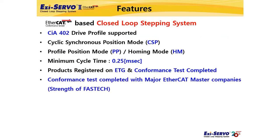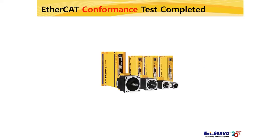The conformance was also verified by conducting actual tests with various EtherCAT master companies. Although EZ Servo 2 EtherCAT has completed compatibility verification and received official certification, it doesn't prove compatibility with each manufacturer's EtherCAT master. Thus, in cooperation with Fastech and major EtherCAT master companies, compatibility verification between master and slave based on CIA-402, a standard profile for EtherCAT drive motion control, has been completed — a distinctive feature of Fastech EtherCAT products.